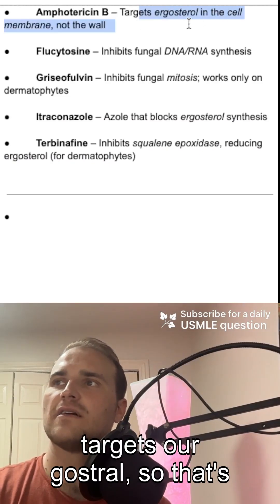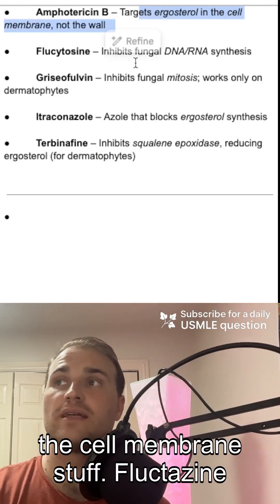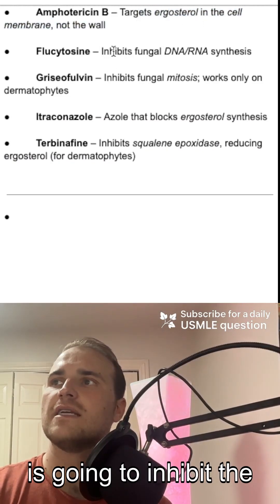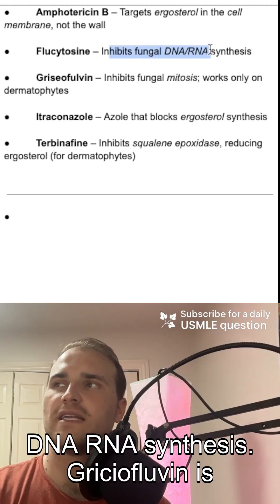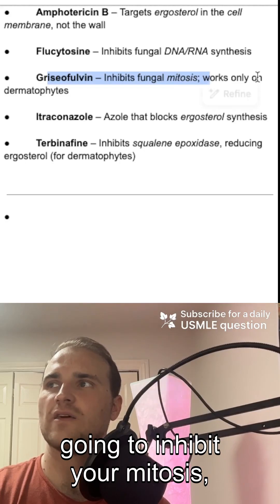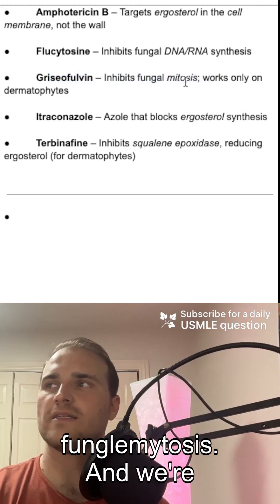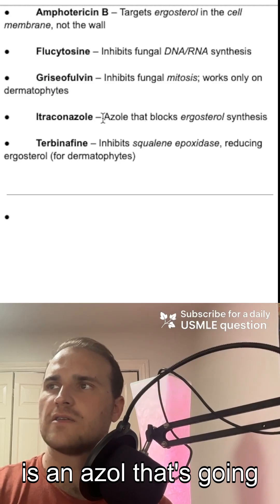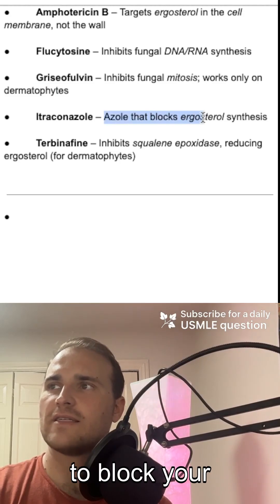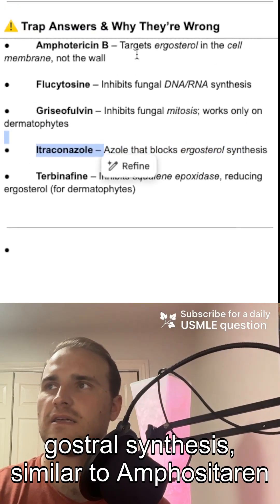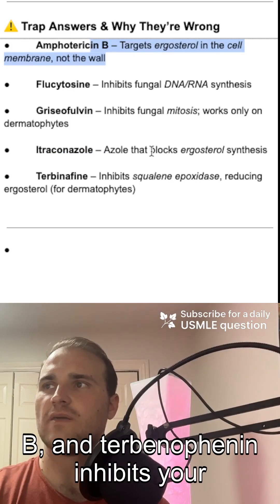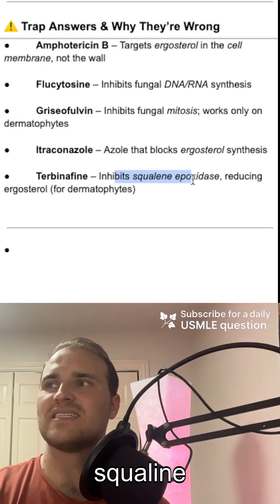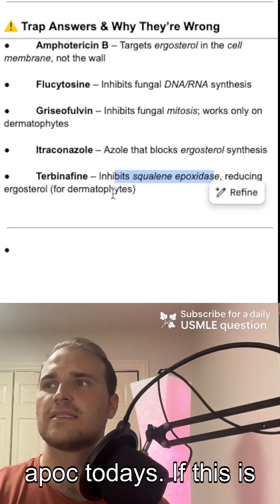Amphotericin B targets ergosterol, so that's the cell membrane. Flucytosine inhibits fungal DNA and RNA synthesis. Griseofulvin inhibits fungal mitosis and works on dermatophytes. Itraconazole is an azole that blocks ergosterol synthesis, similar to Amphotericin B. And terbinafine inhibits squalene epoxidase.